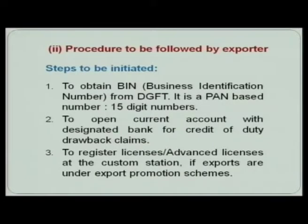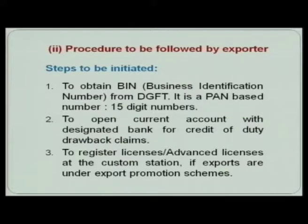The procedure to be followed by the exporter: first, the exporter should obtain the business identification number (BIN) from the Director General of Foreign Trade — a 15-digit PAN-based number. Then, the exporter should open a current account with a designated bank for crediting duty drawback claims. The third step is to register licenses or advance licenses at the customs station if exports are under export promotion schemes.